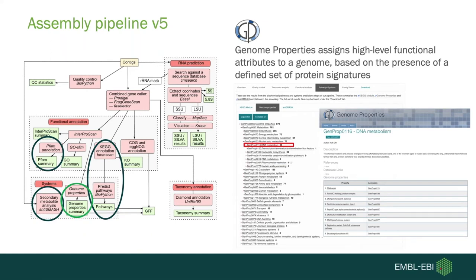Next we look at genome properties. We've taken InterProScan annotations and used them to look at what pathways we can identify. Genome properties assigns a high-level functional attribute to genomes based on the presence of a defined set of protein signatures. The properties — which often describe pathways — are composed of steps, each defining a protein required for that pathway's function. Users can browse the genome properties arranged within a hierarchy and link out to the genome properties website.